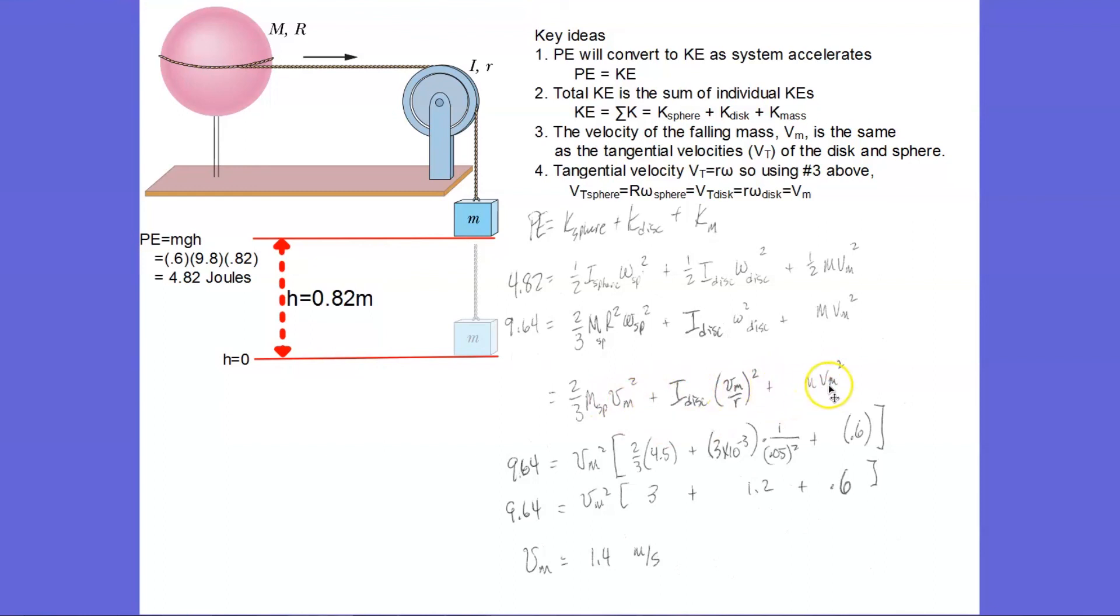And it happens to be vm squared in every term. So I'm going to factor out the vm squared. The mass of my spherical shell is 4.5 kilograms. The moment of inertia of the disk was given to me as 0.003 kilogram meter squared.